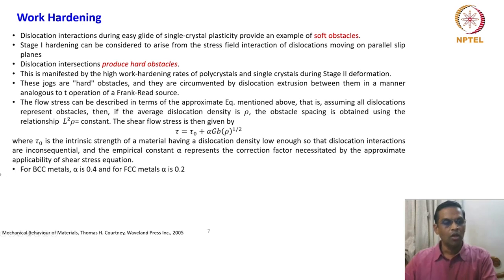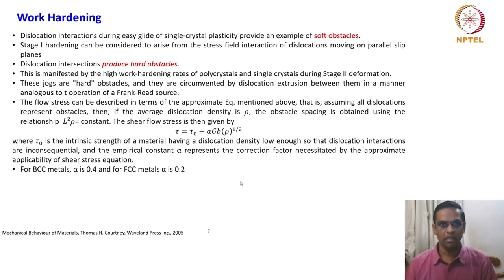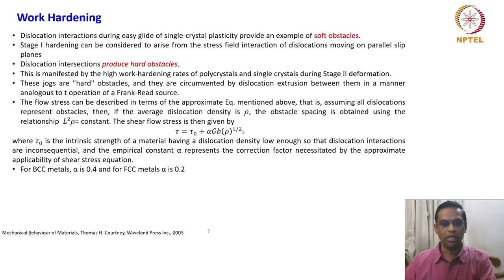The flow stress can be described in terms of the approximate equation, assuming the dislocation relationship L² × rho = constant. The shear flow stress is then given by: tau = tau_0 + alpha × G × b × sqrt(rho), where tau_0 is the frictional stress and the empirical constant alpha represents the correction factor. For a BCC metal, alpha = 0.4, and for FCC metal, alpha = 0.2. This equation shows how dislocation density controls the shear flow stress.